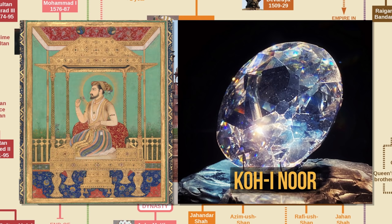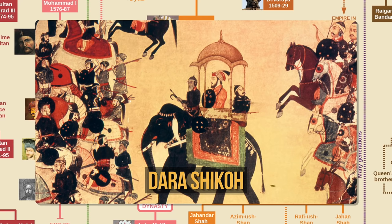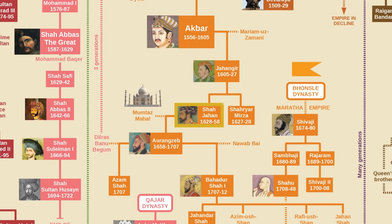In 1658, Shah Jahan fell ill and his four sons picked up the sword, starting the Mughal War of Succession. In Mughal tradition, the princes were allowed to build power bases around the empire and were expected to prepare for a fight against their brothers to claim the throne. Shah Jahan's favourite was the eldest, Dara Shikoh, but he wasn't exactly the most capable general in the empire. That was Prince Aurangzeb. Aurangzeb defeated his brothers and had them executed. He then imprisoned his father Shah Jahan and coronated himself as emperor. Shah Jahan lived under house arrest till his death in 1666.